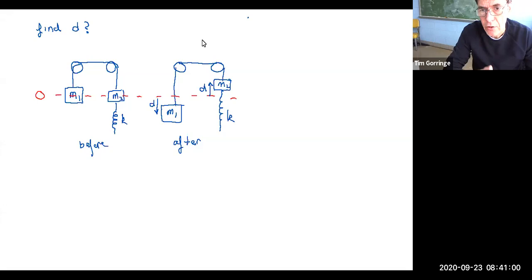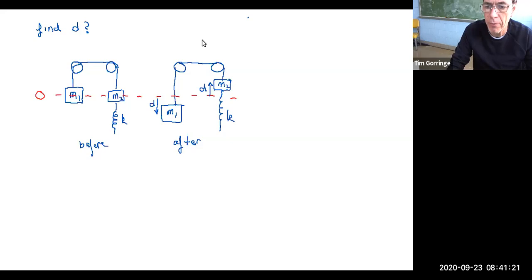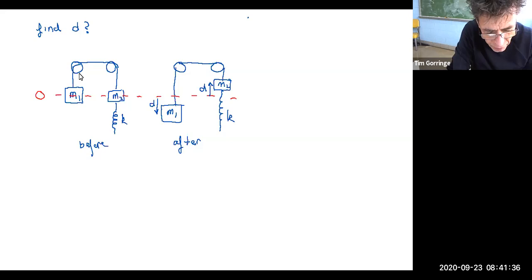In class we've discussed spring potential energy and gravitational potential energy as examples and illustrations of potential energy. I wanted to look at an example problem that involves both spring potential energy and gravitational potential energy — a combination of those two potential energies. I picked this problem from the homework. In this problem we have an arrangement that involves a pulley system, two masses, and a spring.